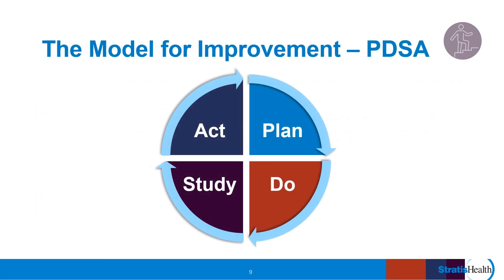Once you have clarified what you want to accomplish, how you will know change is an improvement, and what change you want to make, you are ready to test your changes. Testing of changes is done in Plan-Do-Study-Act, or PDSA cycles. Resist the urge to skip testing of changes. Teams are often eager just to implement their ideas, which they are pretty sure are the best ideas and will work. As a quality improvement leader in your organization, you can encourage a systematic testing of changes before full implementation. This will help ensure that you are implementing the right changes in the right way. Over the next four slides, we will talk about the key components in PDSA cycles.